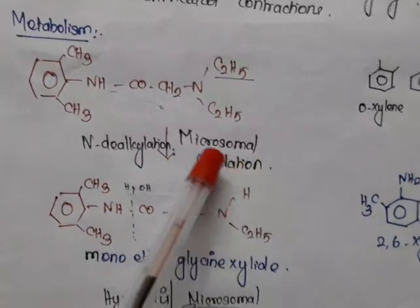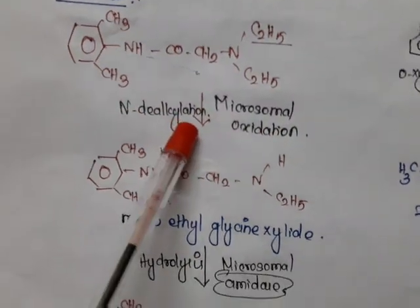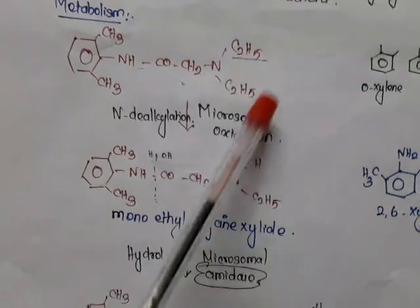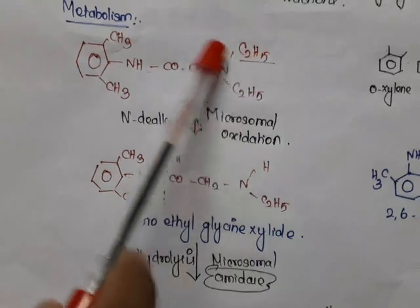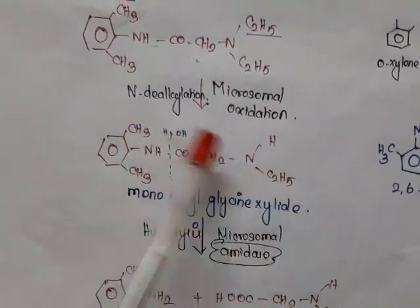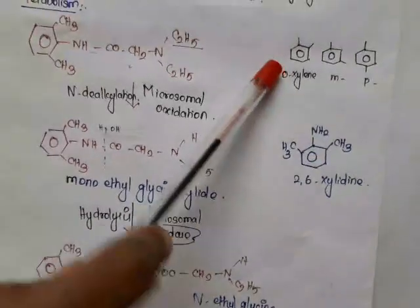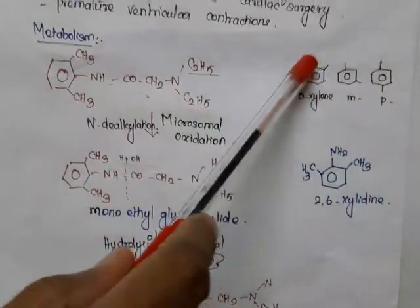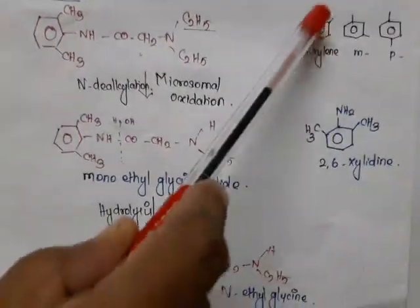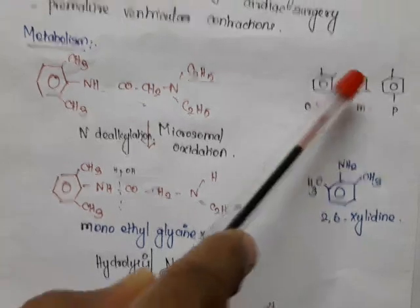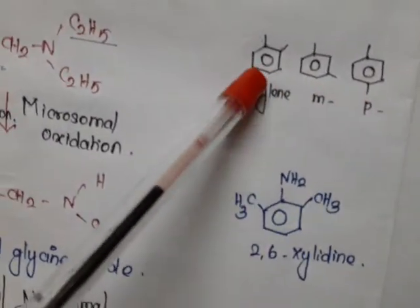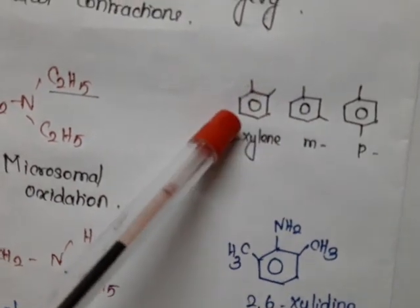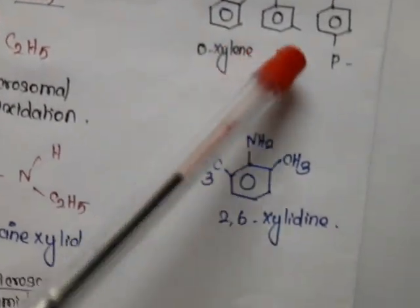For the metabolism of lidocaine, it undergoes microsomal oxidation and N-dealkylation. At nitrogen 2, two alkyl groups are present; one ethyl is removed by N-dealkylation. The product is called monoethylglycinexylidide. The 'xylidide' part refers to xylene, which is a benzene ring with two CH3 groups. Depending on their positions, it can be ortho-, meta-, or para-xylene.